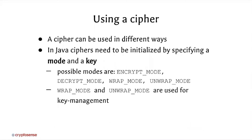So let's look at how we use a cipher. A cipher in Java can be used in different ways by specifying a different mode: encrypt mode, decrypt mode, wrap mode, and unwrap mode. Encrypt and decrypt are straightforward. Wrap and unwrap correspond to encrypt and decrypt but are specifically used for encrypting other keys — a very useful operation that we'll see more about in the session on key management.